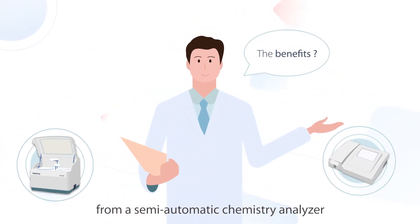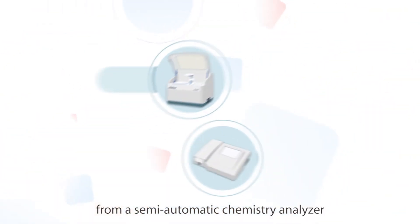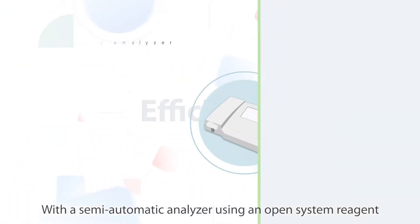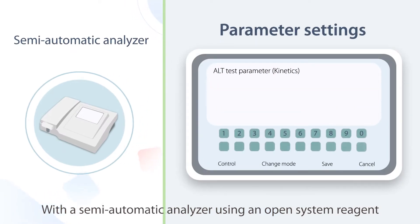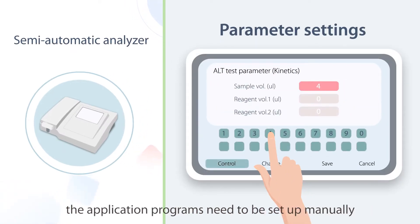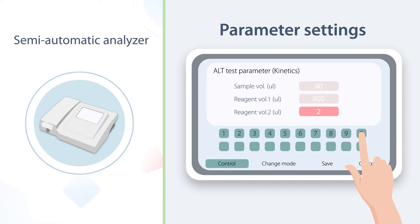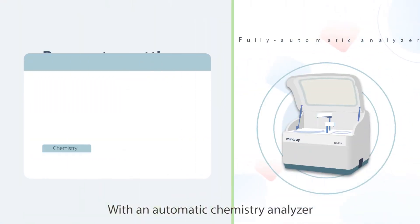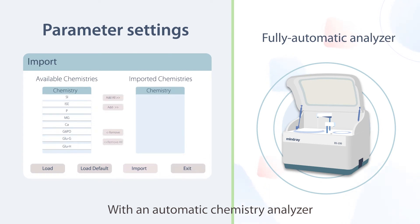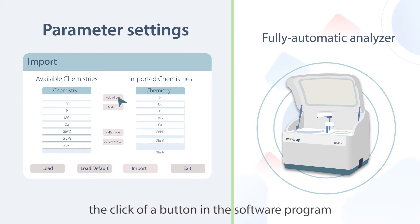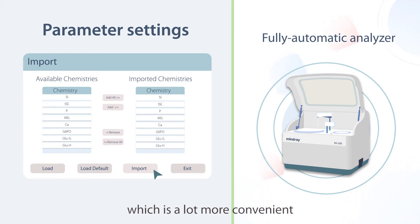What are the benefits of upgrading from a semi-automatic chemistry analyzer to an automatic chemistry analyzer? With a semi-automatic analyzer using an open system reagent, the application programs need to be set up manually. With an automatic chemistry analyzer, all application programs can be imported at the click of a button in the software program, which is a lot more convenient.